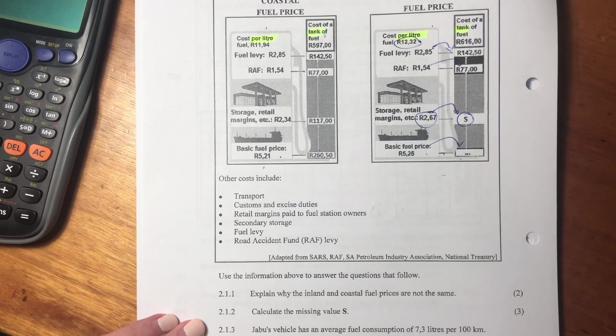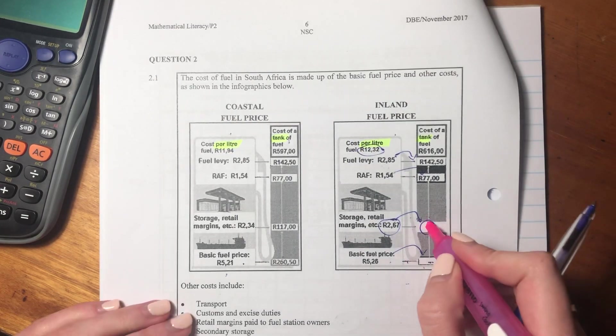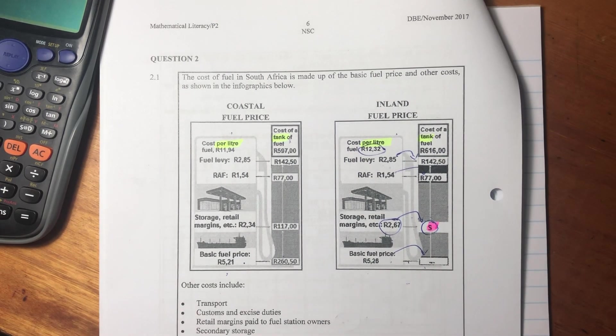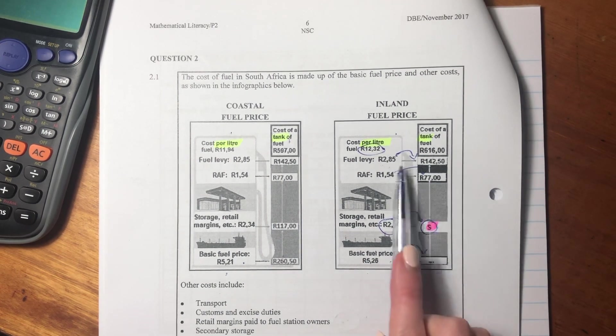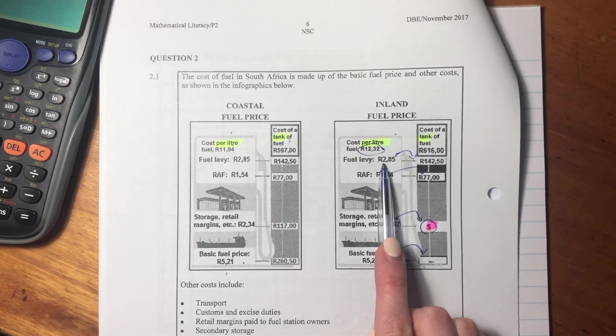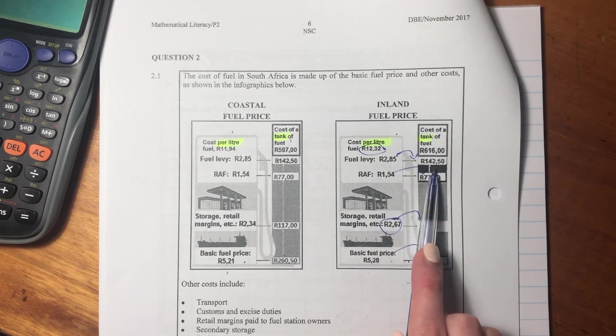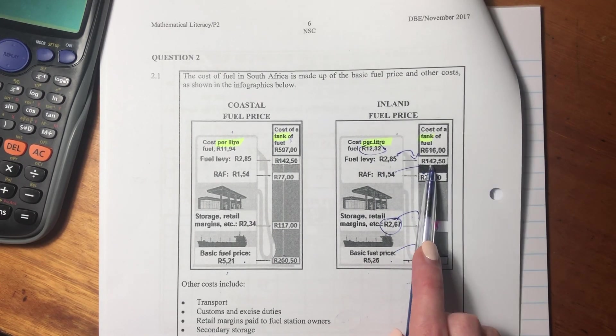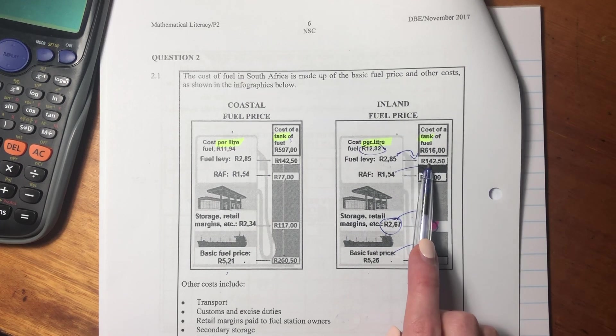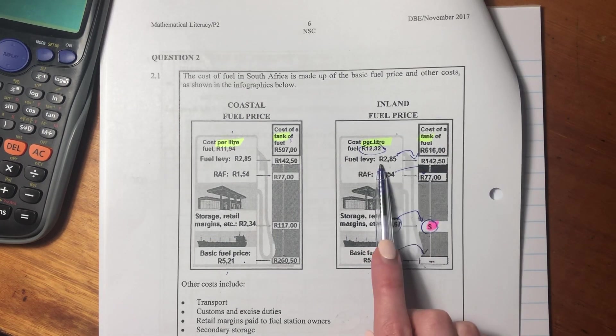So 2.1.2 says calculate the missing value S. There's a missing value over here S, so it's basically saying the storage retail margins, etc., that form part of a liter. How much is that when we multiply it up to a tank? So what we need to understand is that each of these amounts here is just this amount times by the number of liters in a tank.